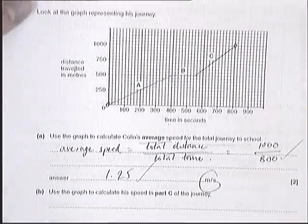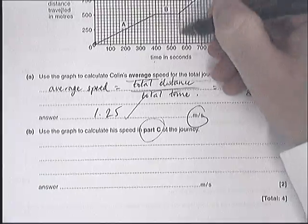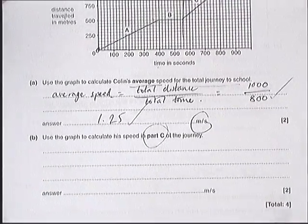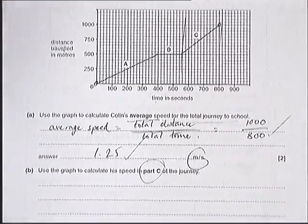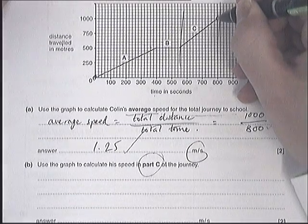Next part, graph to calculate speed in part C. So we're not interested in anything apart from this little section here. And the way you work that out is by working out the gradient. So how tall is it, this little section?